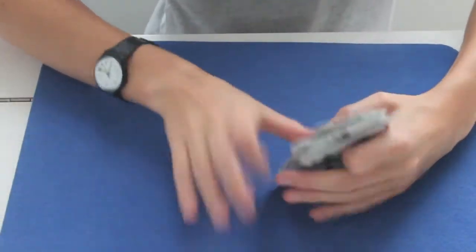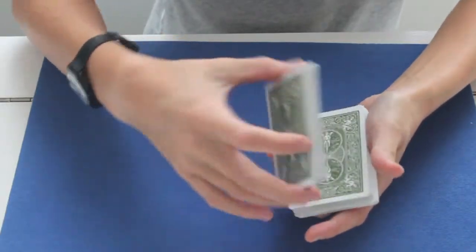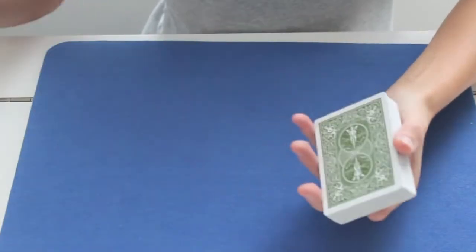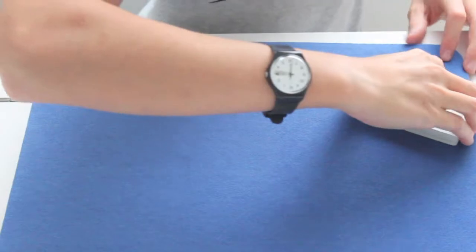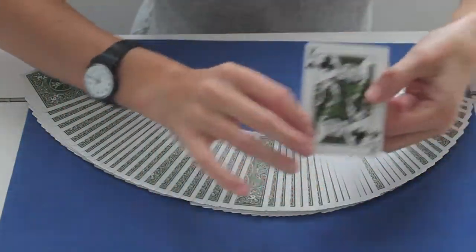As you can see, there are cards back to front, front to back, and back to back. But if I snap my fingers, look—all the deck goes back to normal except for one card: the King of Clubs.